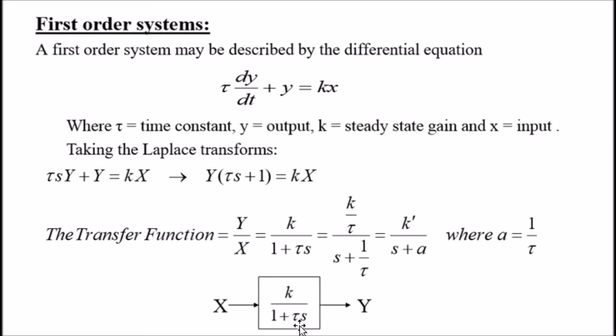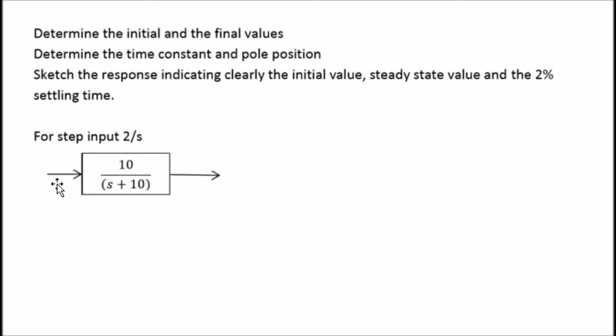So what do we want to do? We've got a step input here, so let's call this x to y. And in order to find initial and final values, let's rewrite this entire equation into the transfer function format. We're going to have y equals x times this quantity here, 10 over s plus 10.